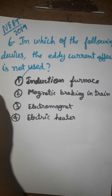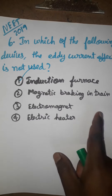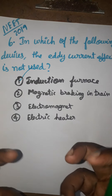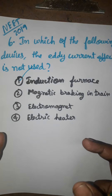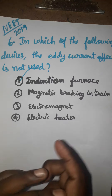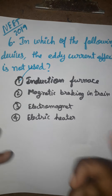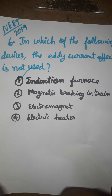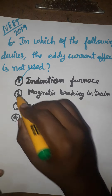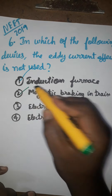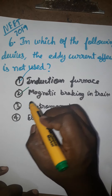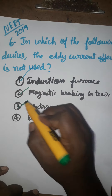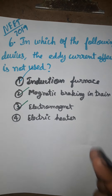Eddy current is also used in magnetic train brakes. When a magnetic field is applied, it induces an opposing current that stops the train. Eddy current is used in electromagnets as well.